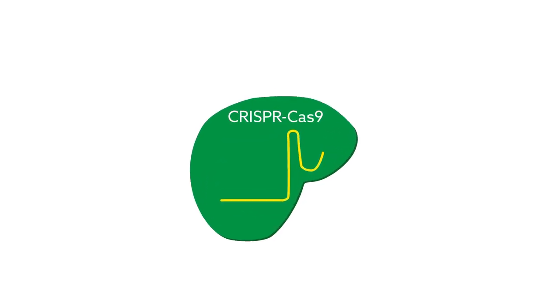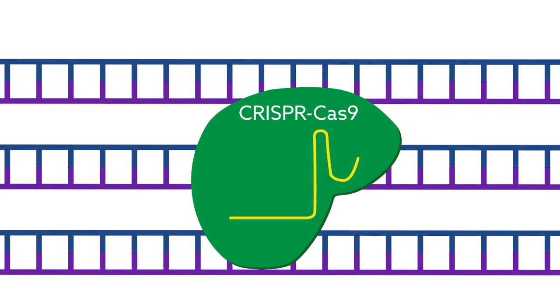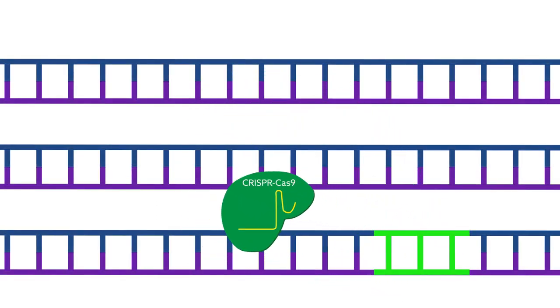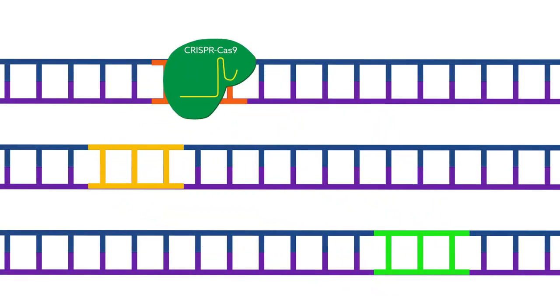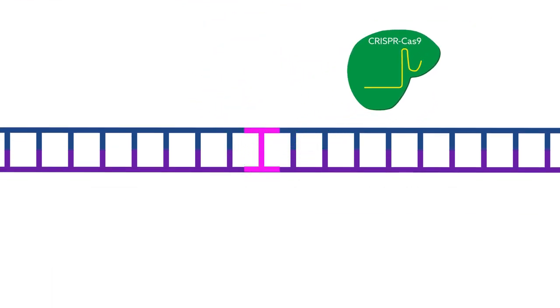The CRISPR-Cas9 genome editing system has revolutionized biomedical science, providing a fast and easy way to modify genes. The version of the technique that allows for the most precise edits, though, doesn't work in cells that are no longer dividing.